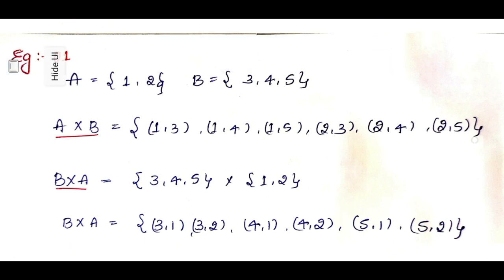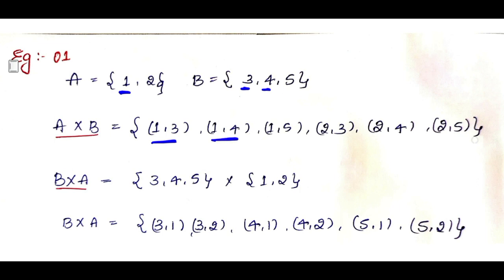Consider set A as {1, 2} and set B as {3, 4, 5}. We need to calculate A cross B. You take element 1 from set A and pair it with all the elements of set B: ordered pairs (1,3), (1,4), (1,5). Then take the second element 2 and pair with all elements of set B: ordered pairs (2,3), (2,4), (2,5).